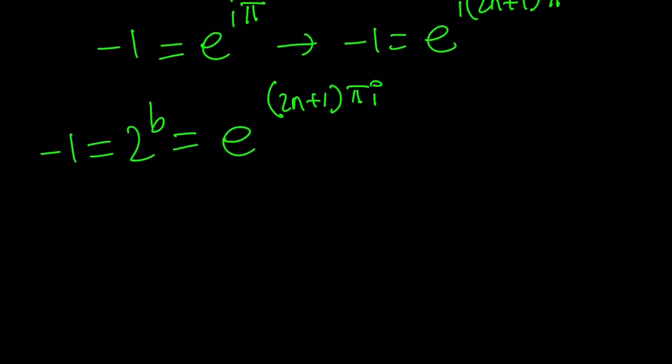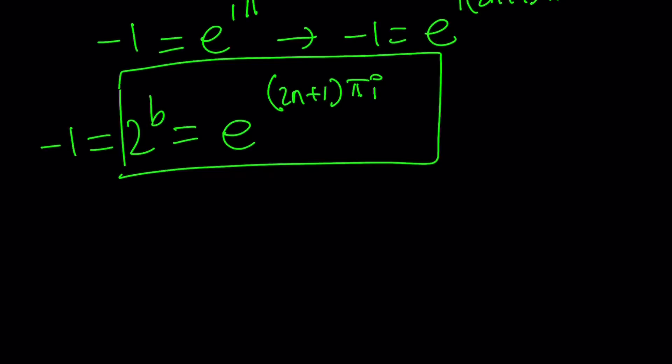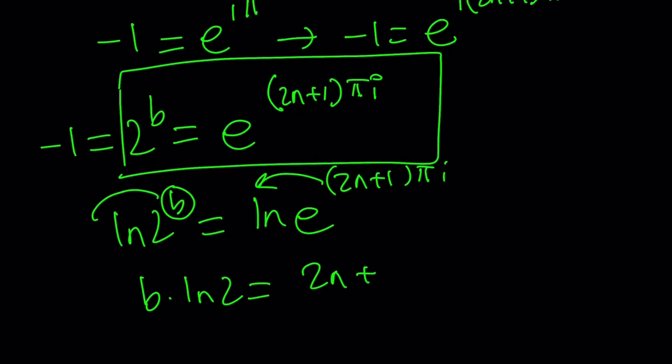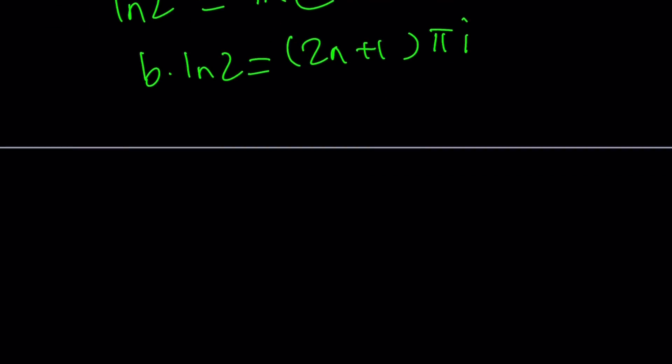We have 2 to the power b equals negative 1. 2 to the power b equals e to the power i times 2n plus 1 pi. This is our equation. And we can solve this by taking the logarithm of both sides. ln 2 to the power b equals ln e to the power 2n plus 1 pi times i. And then b to the front and this power to the front: b times ln 2 equals 2n plus 1 times pi i. ln e is 1, so I don't need to write it. Now, b can be written as 2n plus 1 multiplied by pi i divided by ln 2.